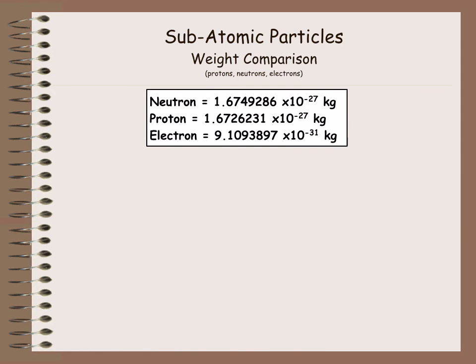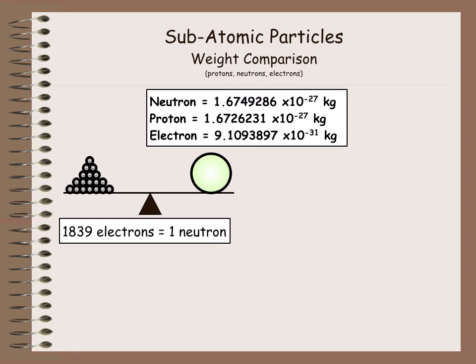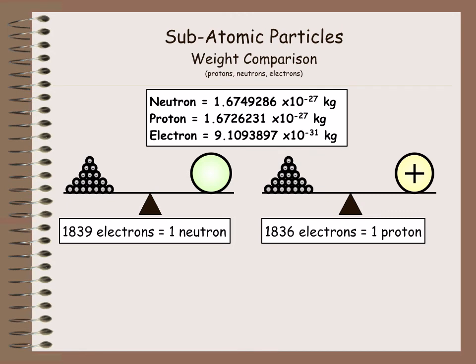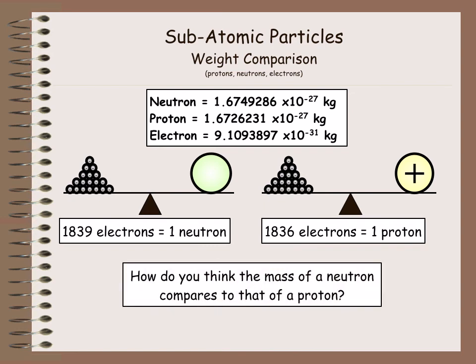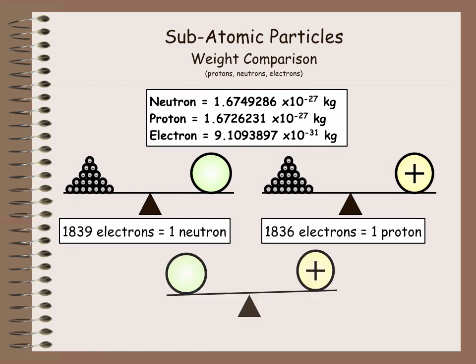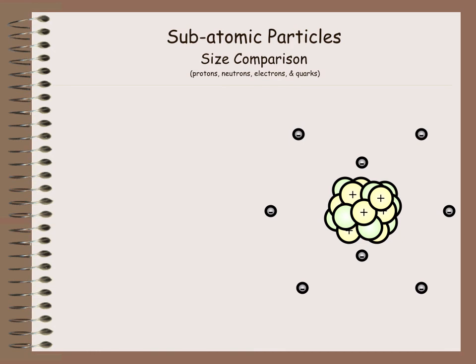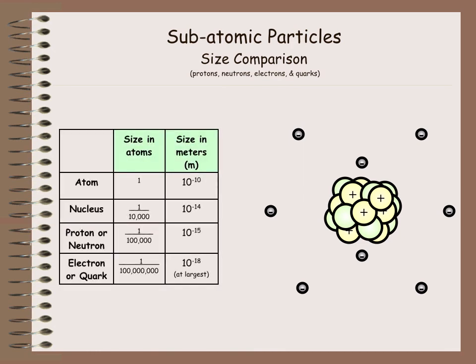And then this is just so that you can see the weights here so you can have this comparison. So 1839 electrons is going to be equal to one neutron. Neutrons are the biggest here. And 1836 electrons are equal to one proton. So we can basically say that electrons have no mass. And then neutrons and protons are almost one to one. So if you want to take a moment at home to copy down this chart, you can see these.